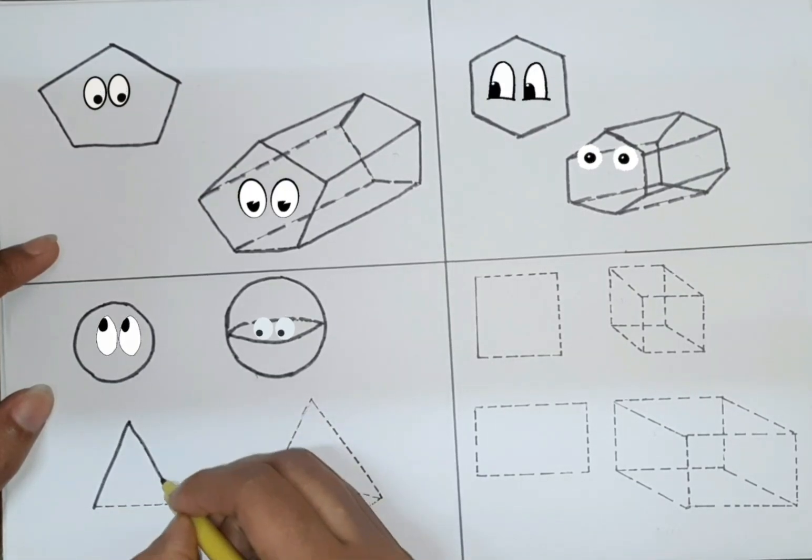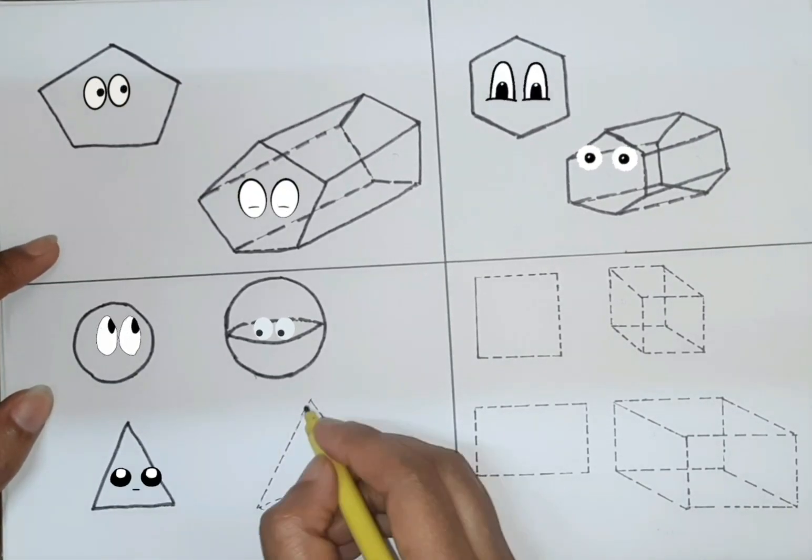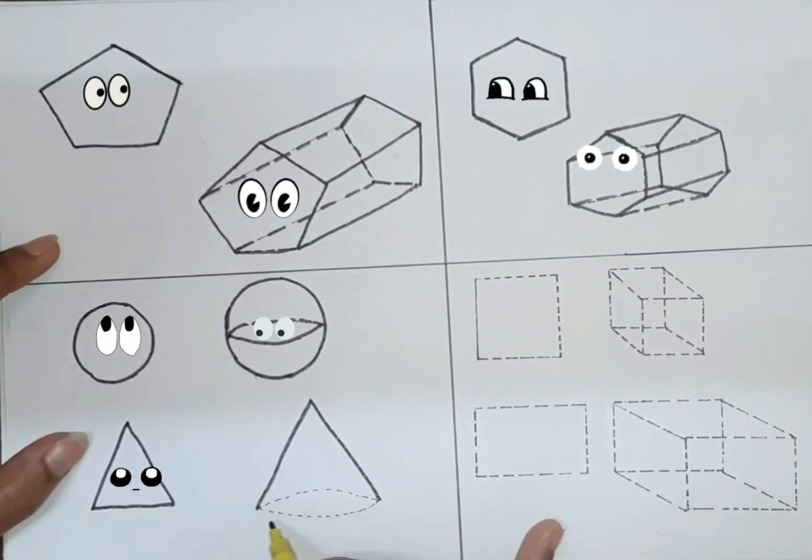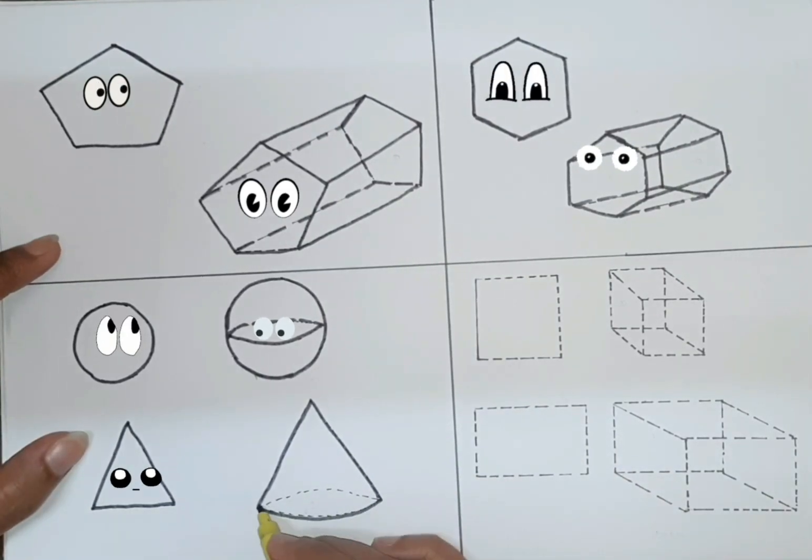It is triangle in 2D shape. And this is cone, like ice cream cone. 3D shape.